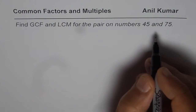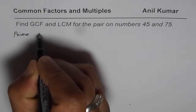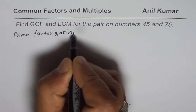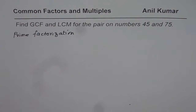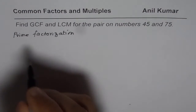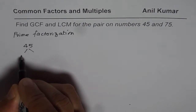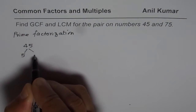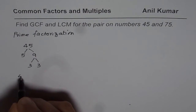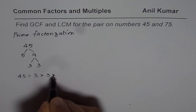Let us do prime factorization first, and once we have the prime factors, we will see how to find the greatest common factor and least common multiple. Let us begin with number 45. Now 45 can be written as 5 times 9, and 9 can be written as 3 times 3. So 45 is equal to 3 times 3 times 5.